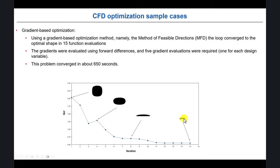The beauty of this problem is that we can also switch to a multi-objective optimization problem — we can reduce drag but also increase lift. Optimization is a very subjective exercise: problem formulation is important. This shape gives minimum drag, but if you want to produce more lift, a different shape will be the optimal one. We can experiment with different designs and change the objective from minimum drag to maximum L/D.